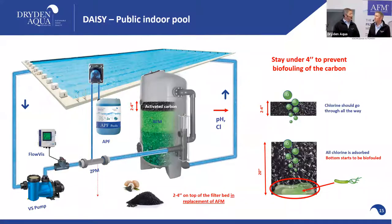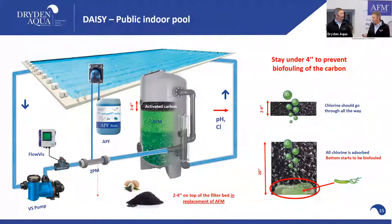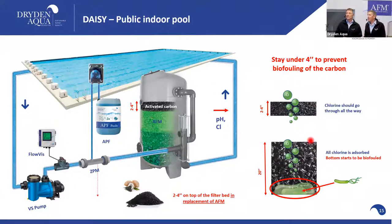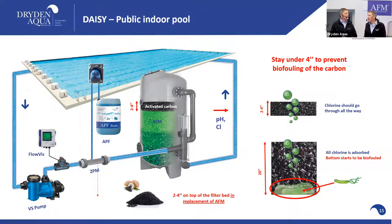Why only this small layer? Because if you have a deeper layer, then this layer will ultimately eliminate all the chlorine — all the free chlorine that's coming through.